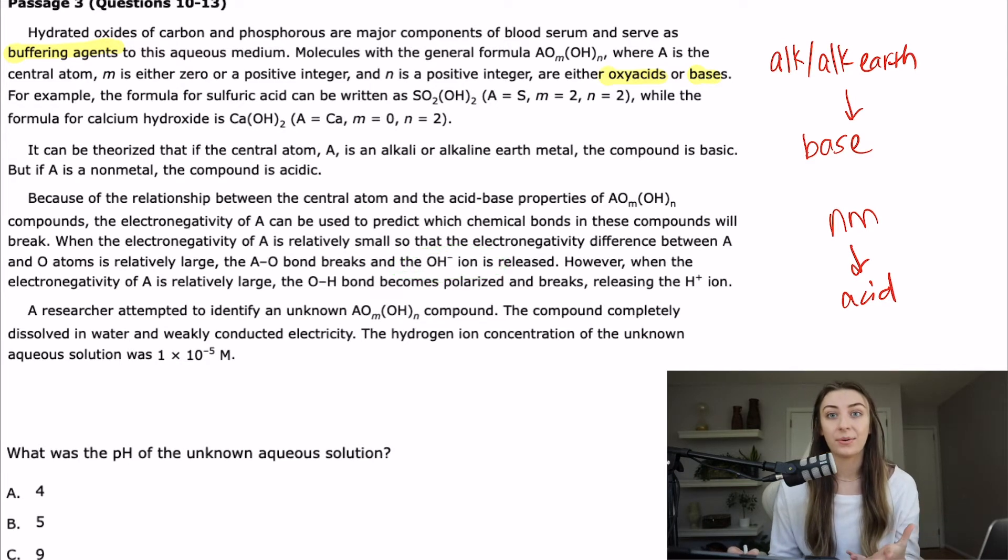I can kind of foreshadow a question here asking about what definition of acid-base chemistry that kind of goes with and that would be probably like an Arrhenius definition of bases. However, when the electronegativity of A is relatively large the OH bond becomes polarized and breaks releasing the H plus ion. That would be probably more of like a Brønsted-Lowry definition I guess. Basically saying the same thing, like electronegativity would be large on your non-metal side and therefore it would be an acid because it's releasing a hydrogen ion.